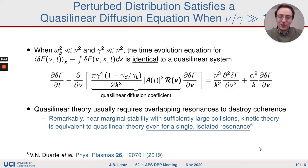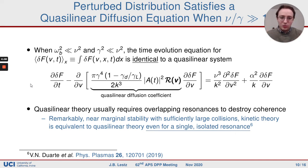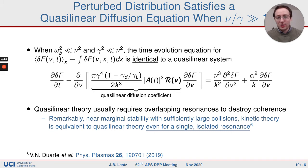Up to this point I've discussed the nonlinear evolution of the mode amplitude, but what about the distribution function? Under these exact same approximations, you can get the evolution equation for delta F, the spatially averaged delta F, and you find it satisfies a quasi-linear diffusion equation — which is interesting because we didn't have to make any new approximations. The nonlinear theory reduces to a quasi-linear theory. I'll draw attention to the resonance function script R, which characterizes the strength of the wave-particle interaction in velocity space.